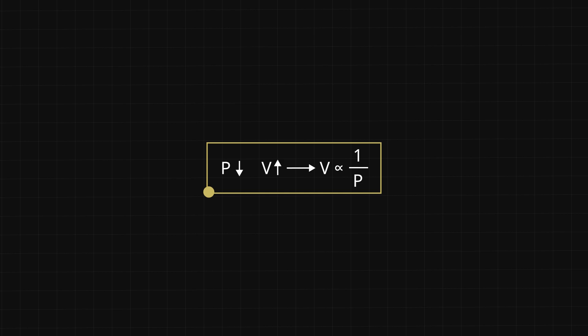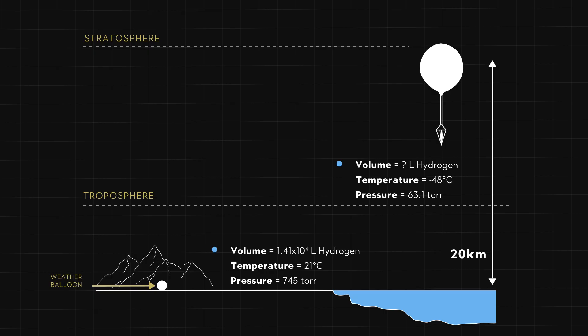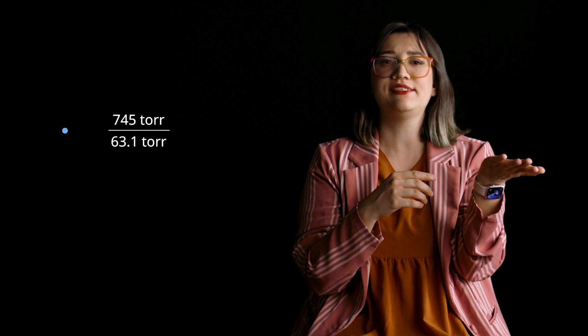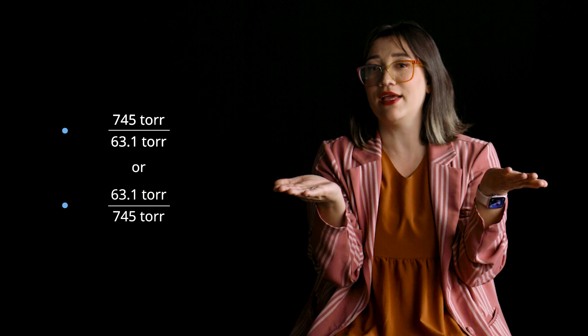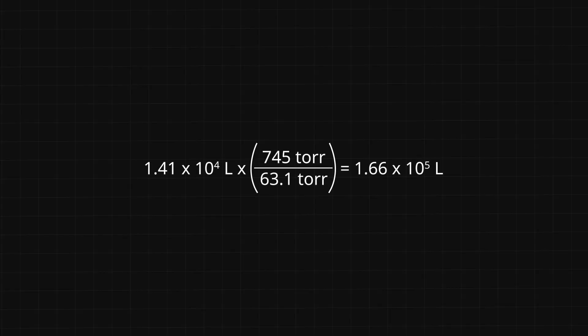So, volume is inversely proportional to pressure. As the balloon rises, the pressure goes down from 745 torr to 63.1 torr. We can use proportional reasoning to calculate the effect of this on the balloon's volume. Because of the proportional relationship, I know that I will multiply my initial volume by either 745 torr divided by 63.1 torr, or 63.1 torr divided by 745 torr. My intuition tells me the decreasing pressure will increase the volume, so I must be multiplying by a number greater than 1. That means: 1.41 × 10⁴ liters × (745 torr ÷ 63.1 torr) = 1.66 × 10⁵ liters.